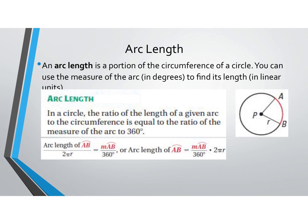Let's talk about arc length before our first example. Arc length is a portion of the circumference of a circle — not the full thing, just a piece. You can use the measure of an arc in degrees to find its actual arc length in linear units, such as inches, meters, or feet. Arc length is the ratio of the length of a given arc to the circumference.